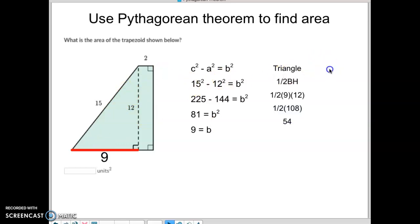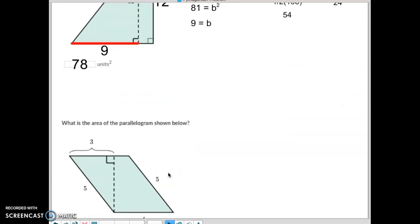And then we need to find the area of the rectangle. The rectangle is just simply base times height. We know if this height here is 12, then the height over here has to be 12 as well. So 2 times 12 is 24. We simply take the 24 and the 54, add them together, and we get 78. Let's do a couple more of these.